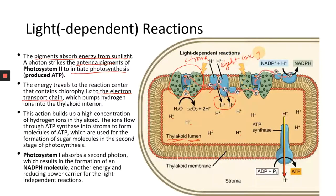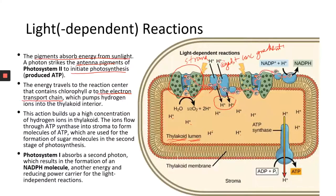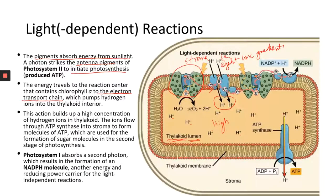The transport of hydrogen ions is against the concentration gradient, which means you need energy to move them — this is a type of active transport. The energy comes from the excited electrons, which provide energy for this protein complex to pump hydrogen ions from low concentration to high concentration, building a hydrogen ion concentration gradient.